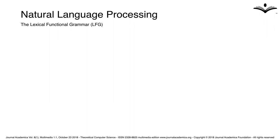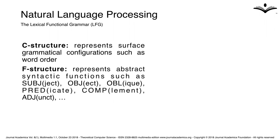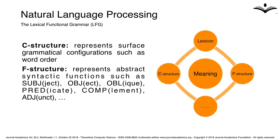Let us look at this problem from the natural language processing angle. We will focus on so-called lexical functional grammars. LFGs are used to recognize sentences of natural language like English by differentiating between two levels of information called C and F structure. A C structure represents surface grammatical configurations such as word order. An F structure represents abstract syntactic functions such as subject, object, predicate, and so on.